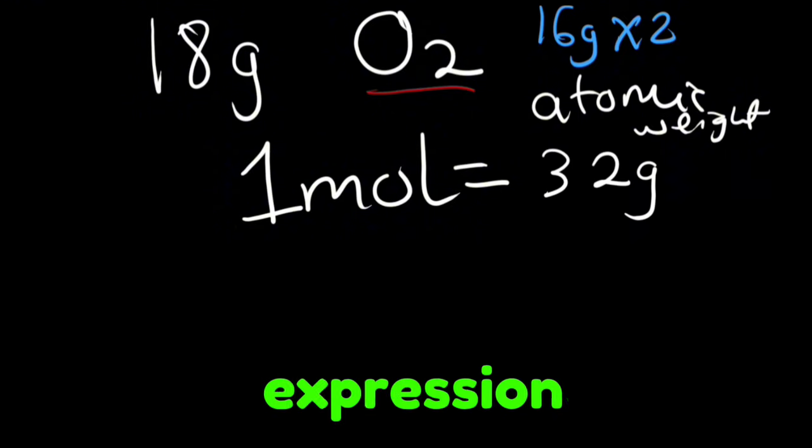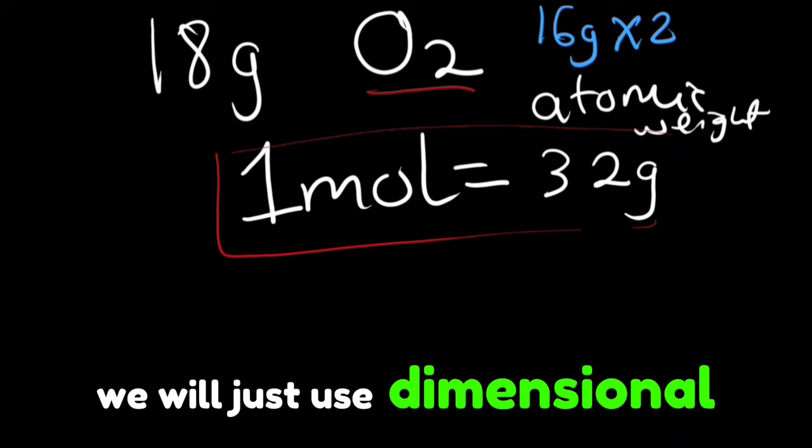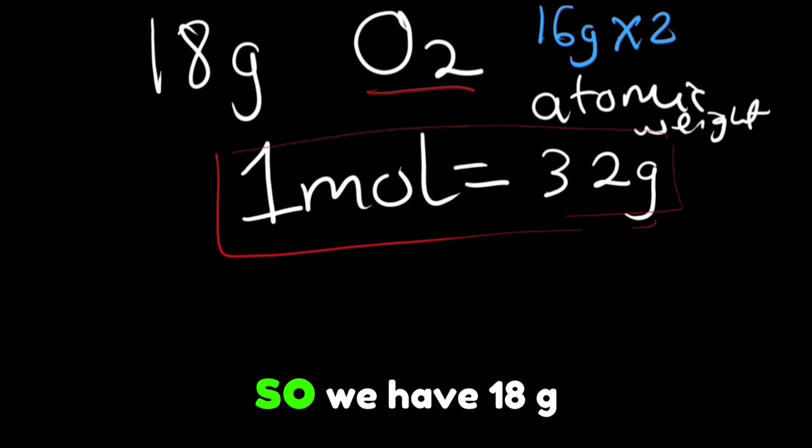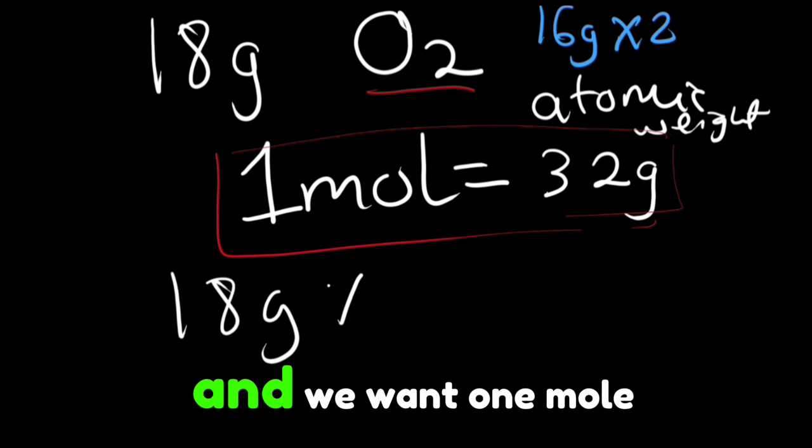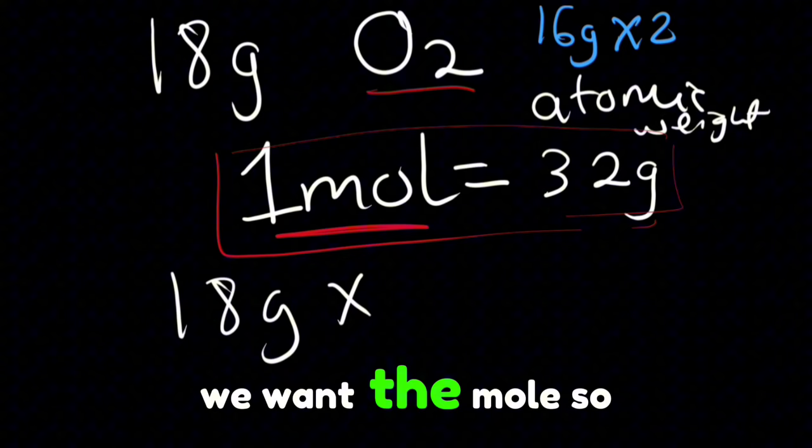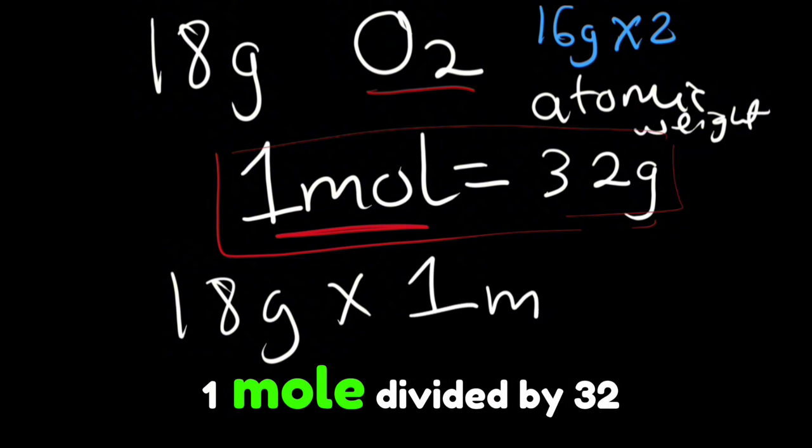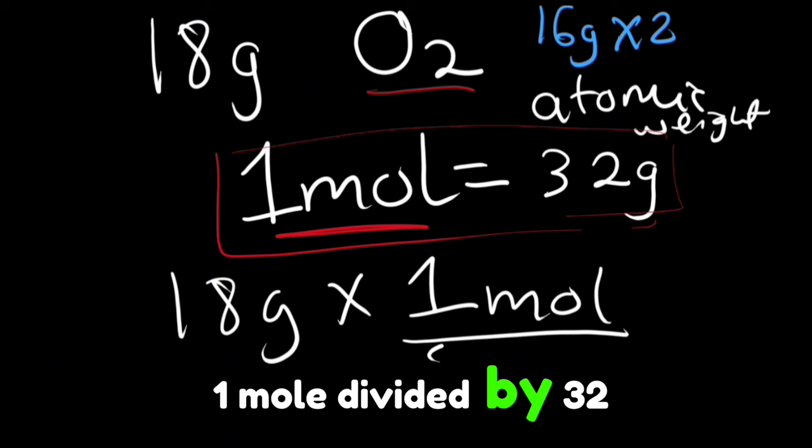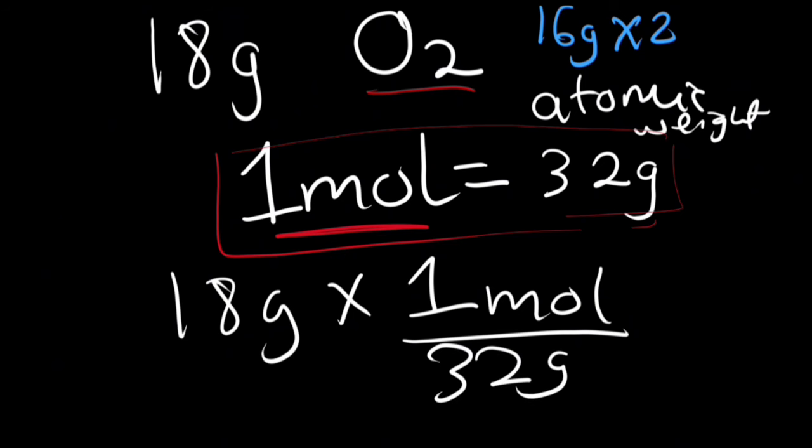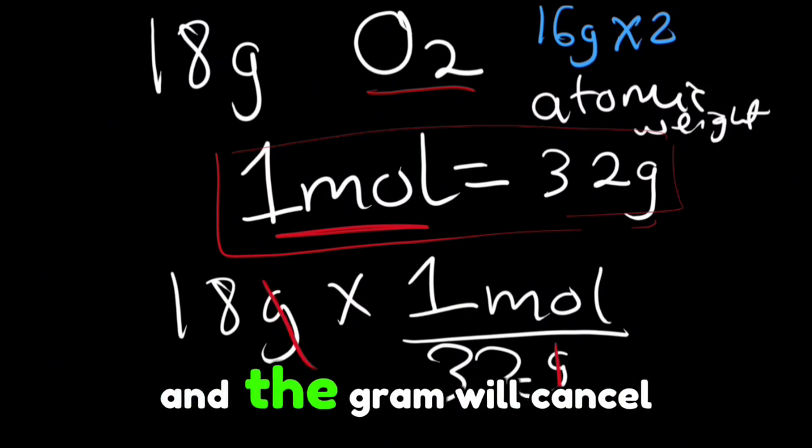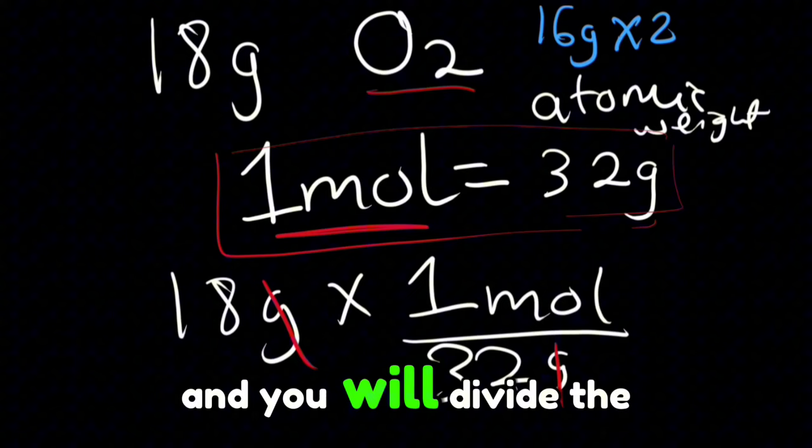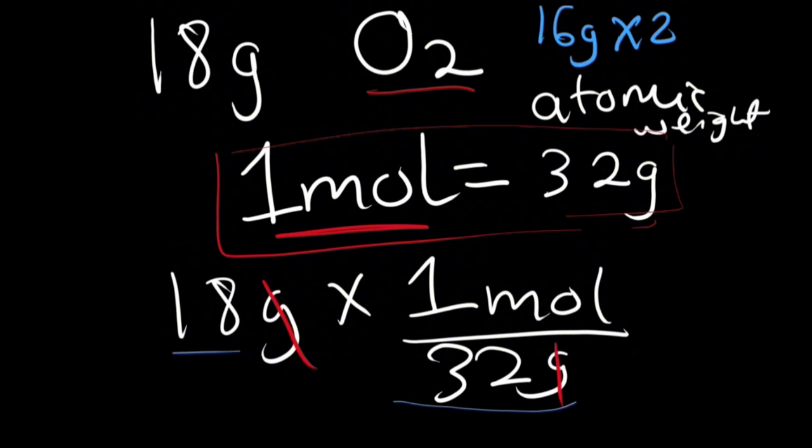Now that we have the expression we will just use dimensional analysis. So we have 18 grams and we want one mole. We want the mole so we will put it on top here. So you'll have multiplied by one mole divided by 32 grams. Now you can see here that the gram and the gram will cancel out and you will divide the 18 with the 32 here.